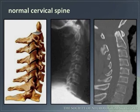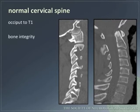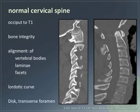Here are images of a normal cervical spine alignment. One must assess from occiput to T1, including bone integrity, the alignment of vertebral bodies, lamina, and facets. The curve should be lordotic. Discs and transverse foramina should also be noted.